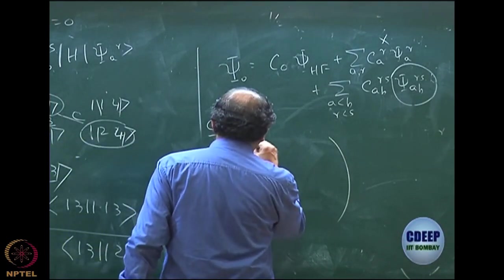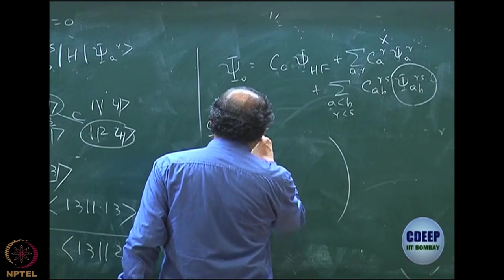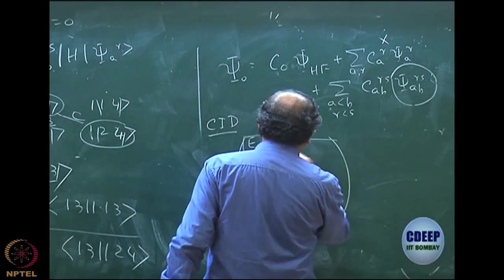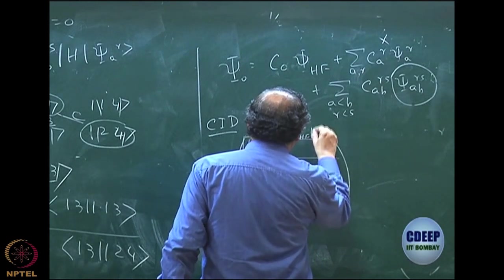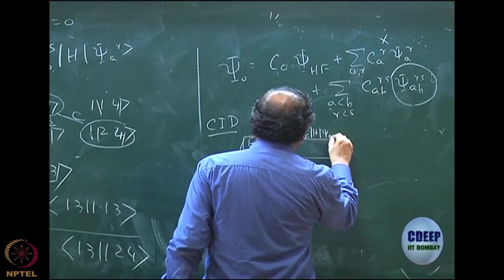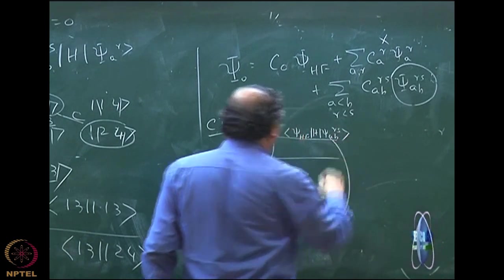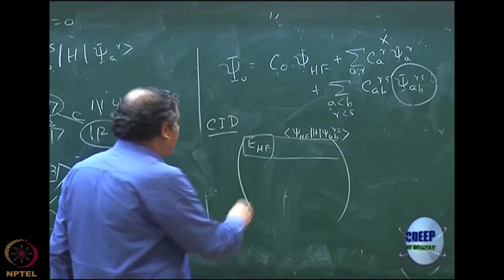First structure is E Hartree-Fock, one number, then I will have a structure of elements between CI Hartree-Fock, H, CI ABRS, exactly in the same manner and this will be the conjugate.